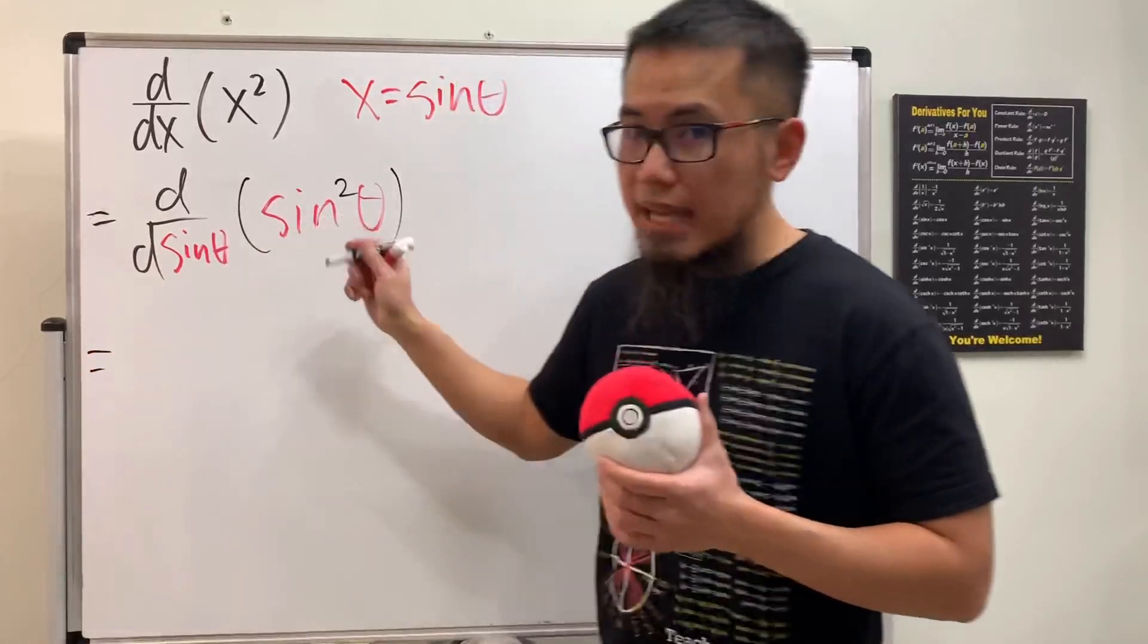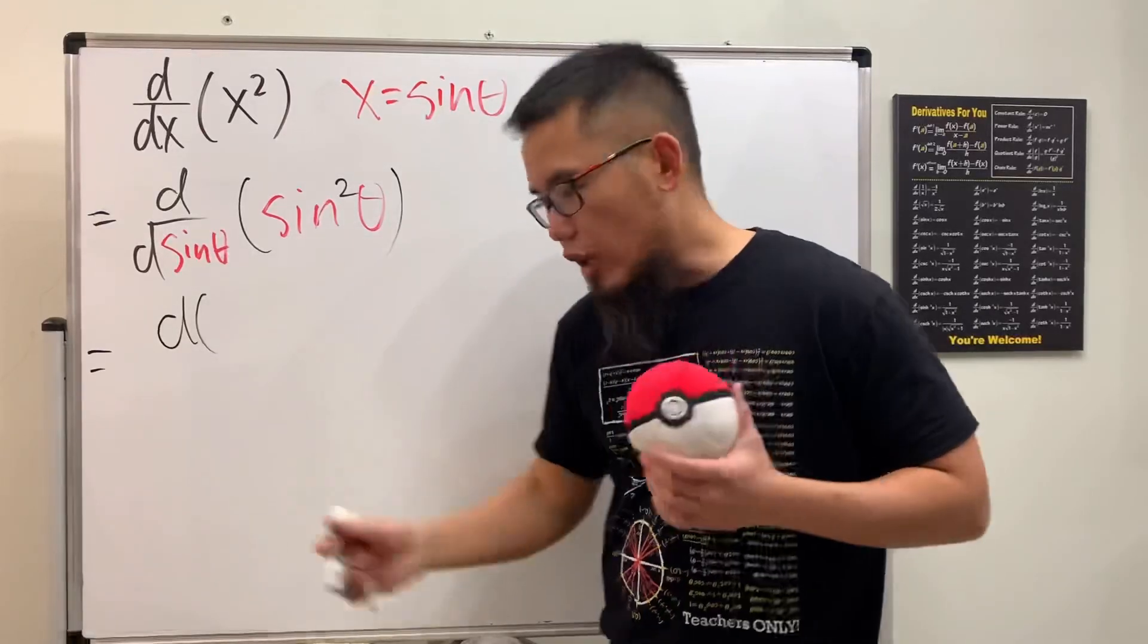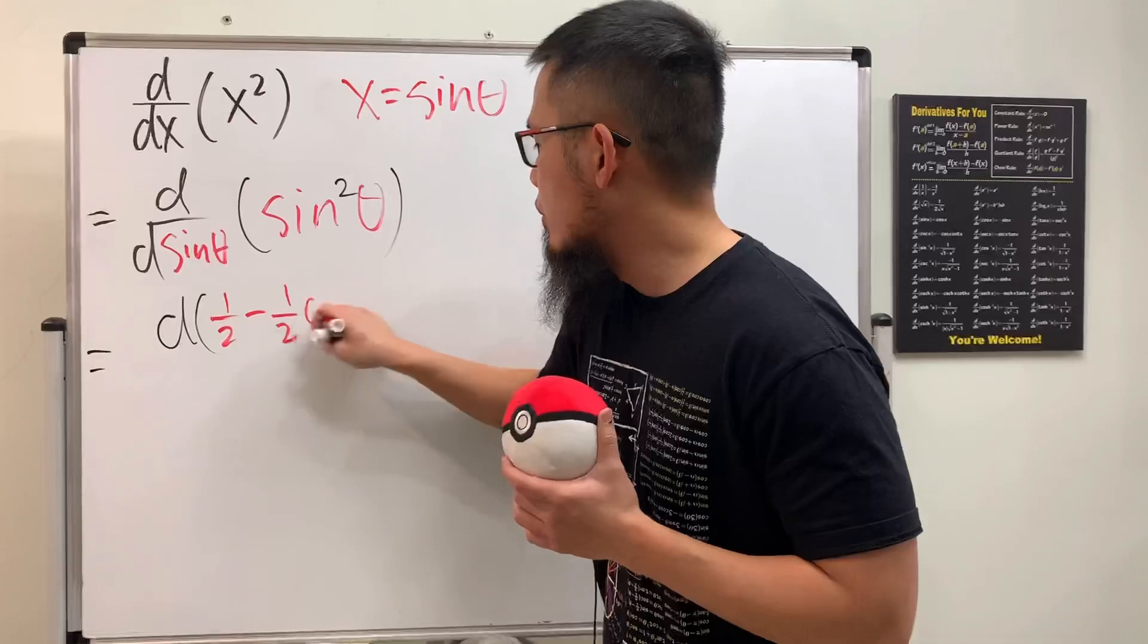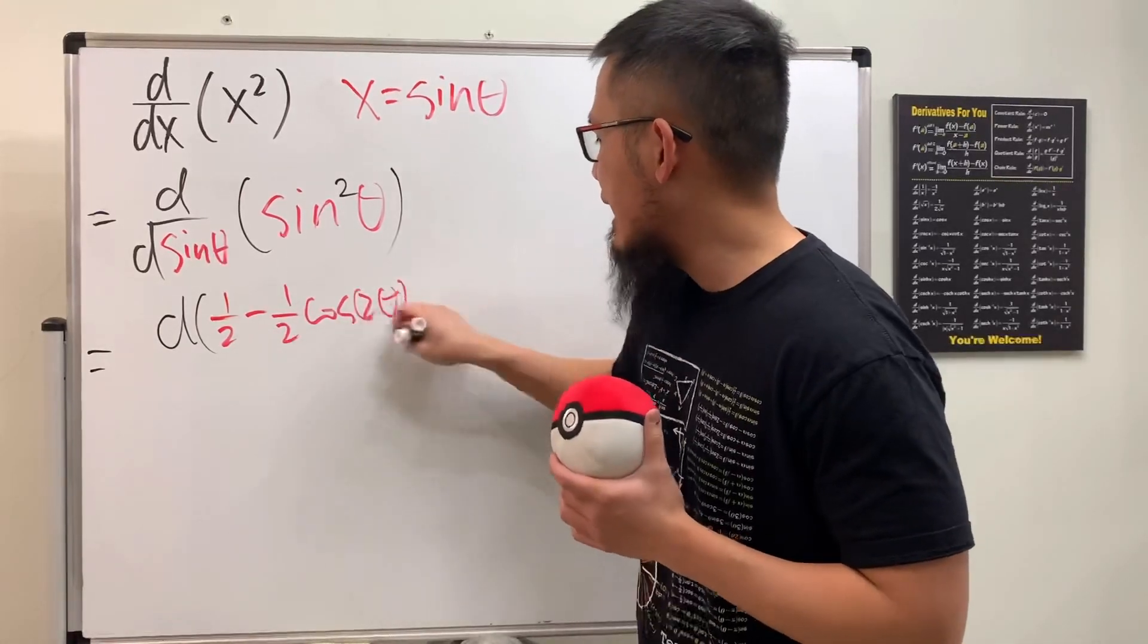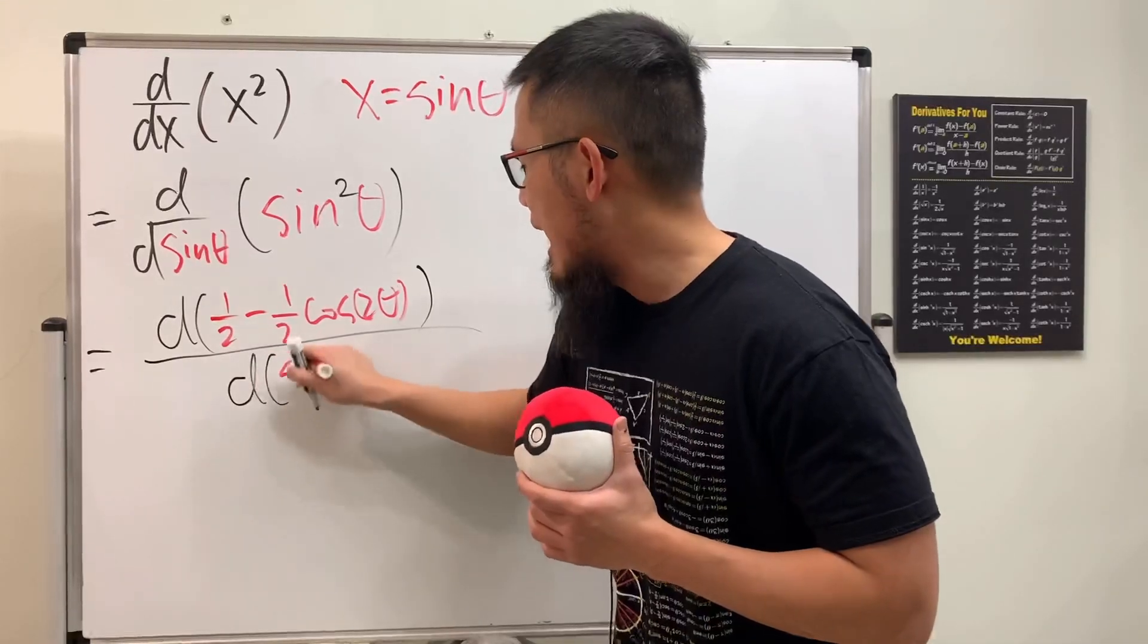Check this out though. Right here, this is actually the same as differentiating the top. This right here we can use the reduction formula for it. We can write this down as 1/2 minus 1/2 cosine of 2 theta like this, and then divide it by differentiating sine theta, which is very nice.